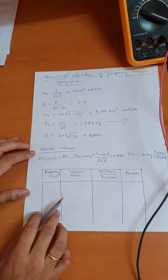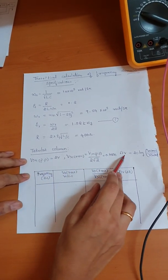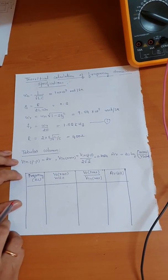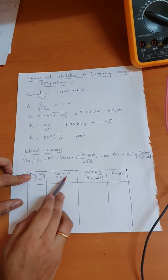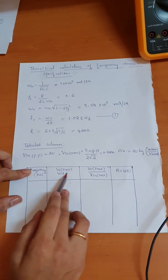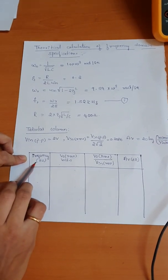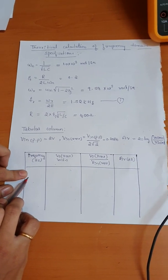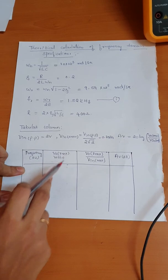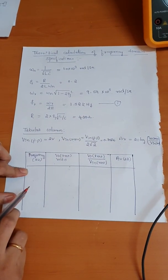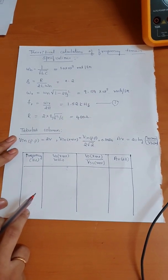Now, this is the tabular column for this experiment. The input voltage considered is 2 volts RMS, used for gain calculation. There are four columns: frequency, Vout RMS (measured using the multimeter connected in parallel to the capacitor), Vout/Vin ratio, and gain in dB — the last two are calculated values. We start taking frequency readings from 200 Hz, increasing in steps of 100 Hz, and continue beyond 1.5 kilohertz.